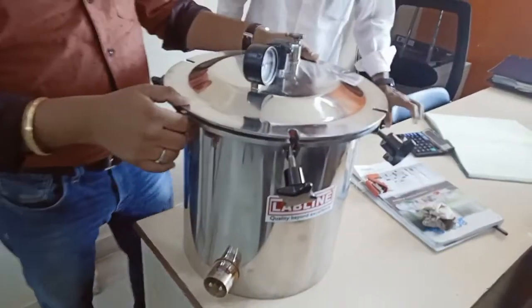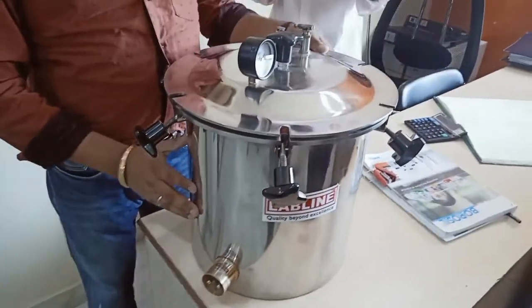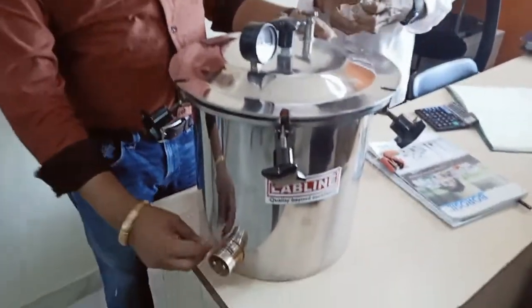This is our Labline autoclave, a very basic bench top model that you can put on a slab or on a table, and then we can add a heater.